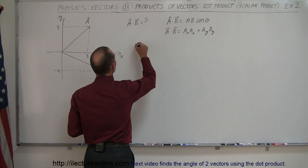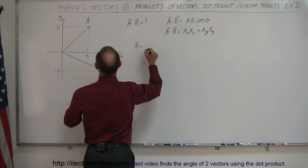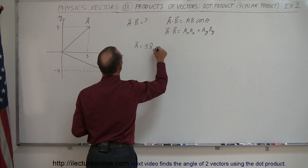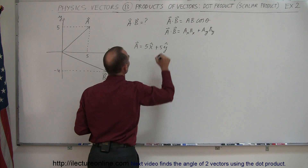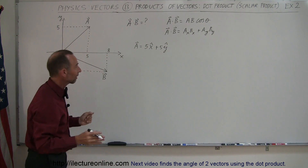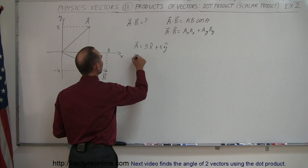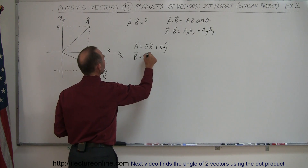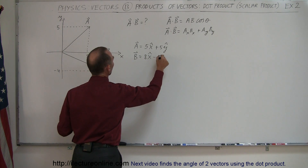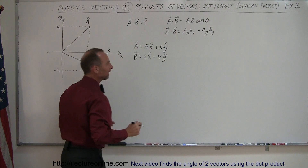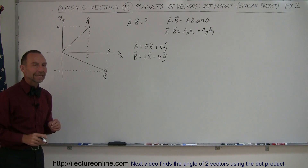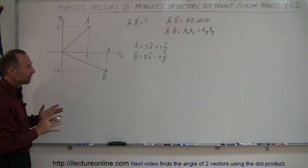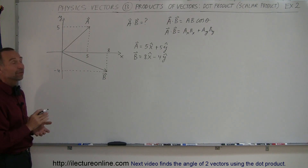For example, vector A is equal to 5 in the X direction plus 5 in the Y direction — no units given, so that's fine. And vector B is equal to 8 in the X direction and minus 4 in the Y direction. A negative component was included so you can see how that method works with negative components.